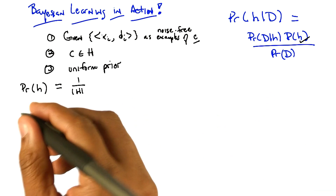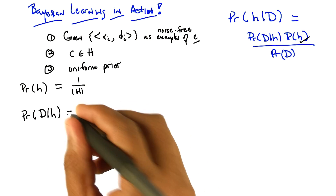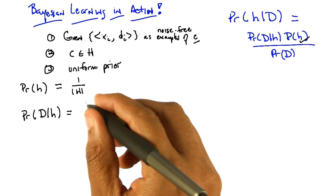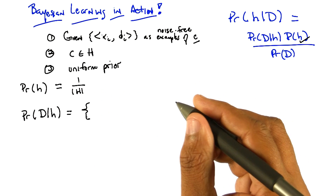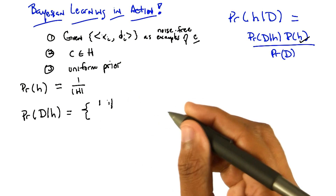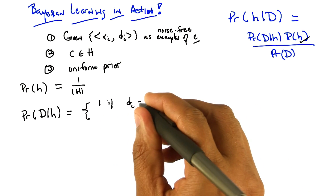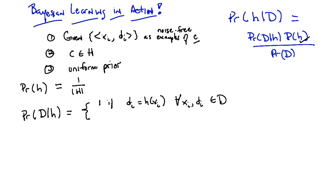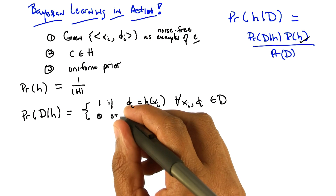How about the probability of data given a hypothesis — what's that? Since it's noise free, they're all going to be zeros and ones. It's going to be a question of whether or not the data is consistent with that hypothesis, right? If the labels all match what we'd expect them to be if that really were the hypothesis, then we get a one, otherwise we get a zero. So the probability of the data given the hypothesis is one if the labels and the hypothesis agree for every single one of the training examples, and if any of them disagree, then the probability is zero.